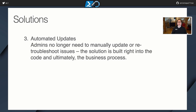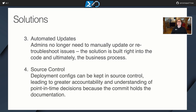The first thing I wanted to do with PowerShell was standardize the process. The ultimate goal was to create established and time-tested processes: read the best practices and implement them within the code. With automated deployments, deployments went from taking a couple hours to just a couple minutes. Being able to deliver these systems faster even eased disaster recovery — I could literally blow away an entire VM and restore it in minutes. With automated updates, admins no longer needed to manually update or re-troubleshoot issues, because any problems I ran into I built the solution right into the code. Deployment configs could be kept in source control, leading to greater accountability and understanding of point-in-time decisions.